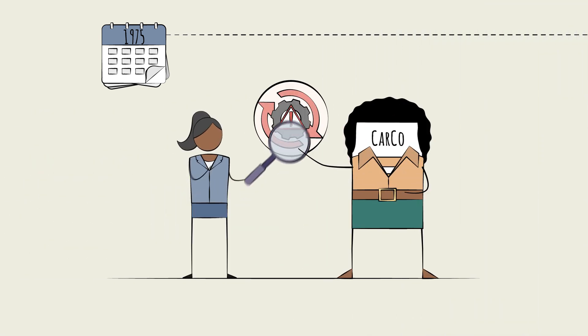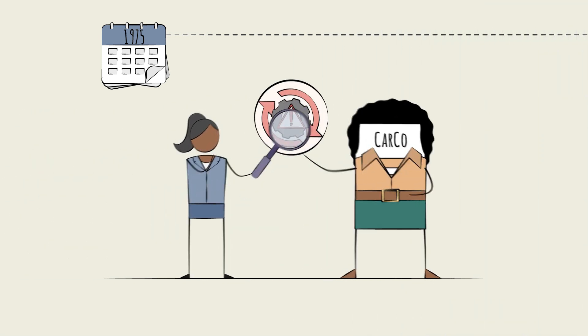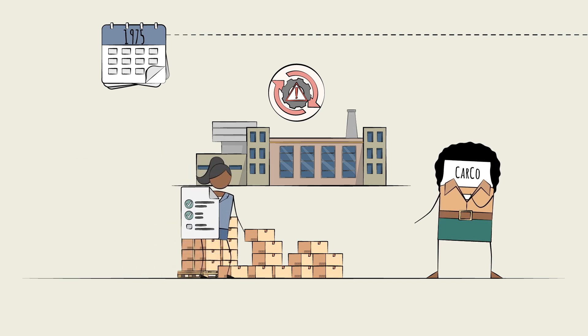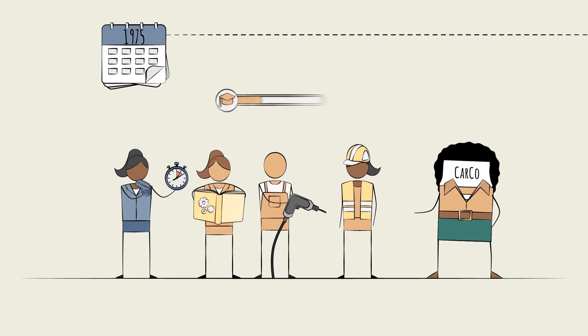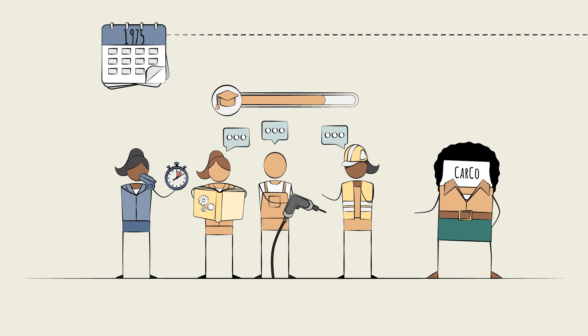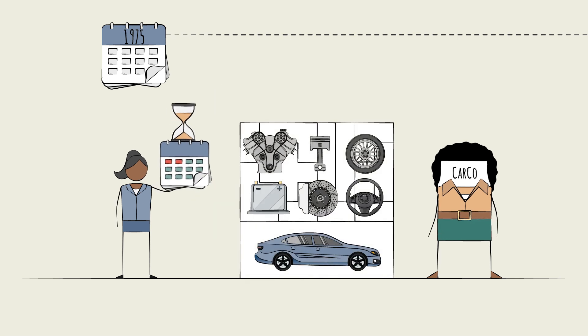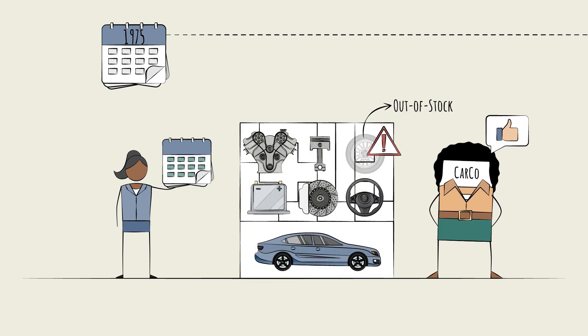In 1975, the consultants rely on hands-on, human-driven problem solving. They recommend reorganizing the factory's inventory system. Employees get trained to communicate better across departments, reducing delays caused by misaligned schedules and out-of-stock parts.